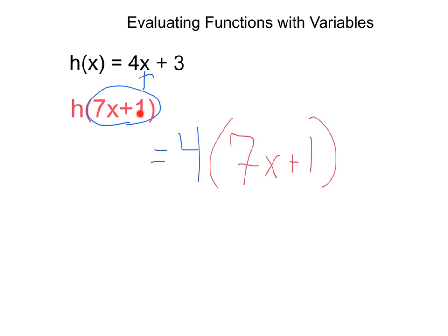just switching out that 7x + 1 for the x, plus 3. Now, we're going to have to distribute. That'll give us 28x + 4, and then we still have this plus 3.